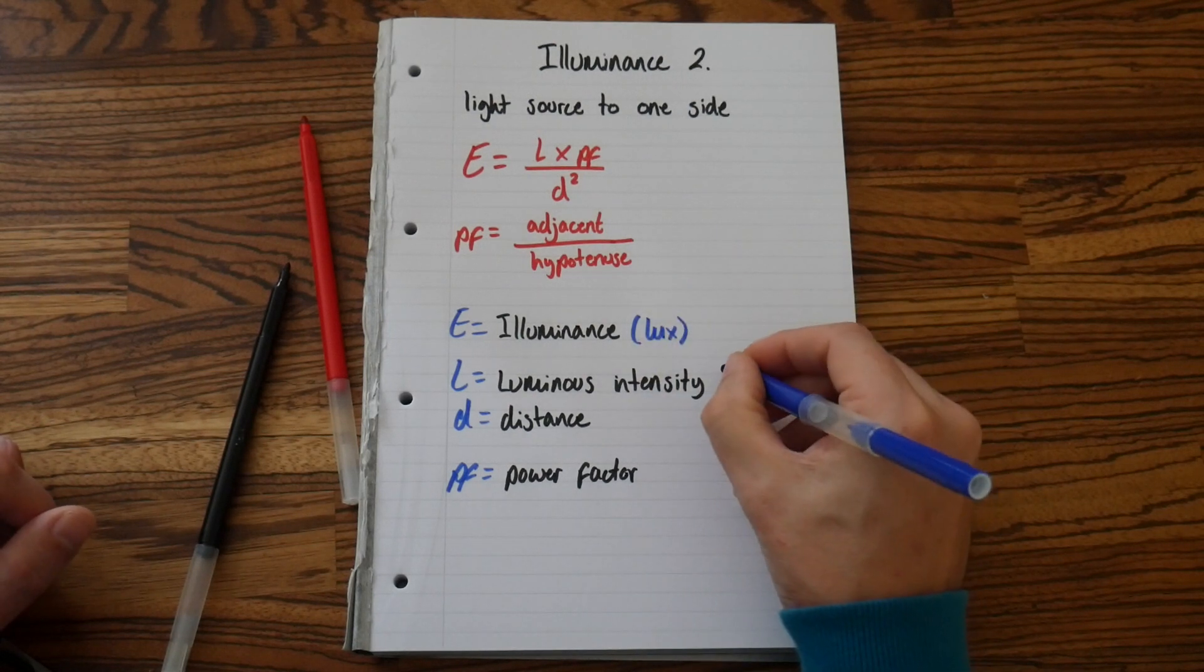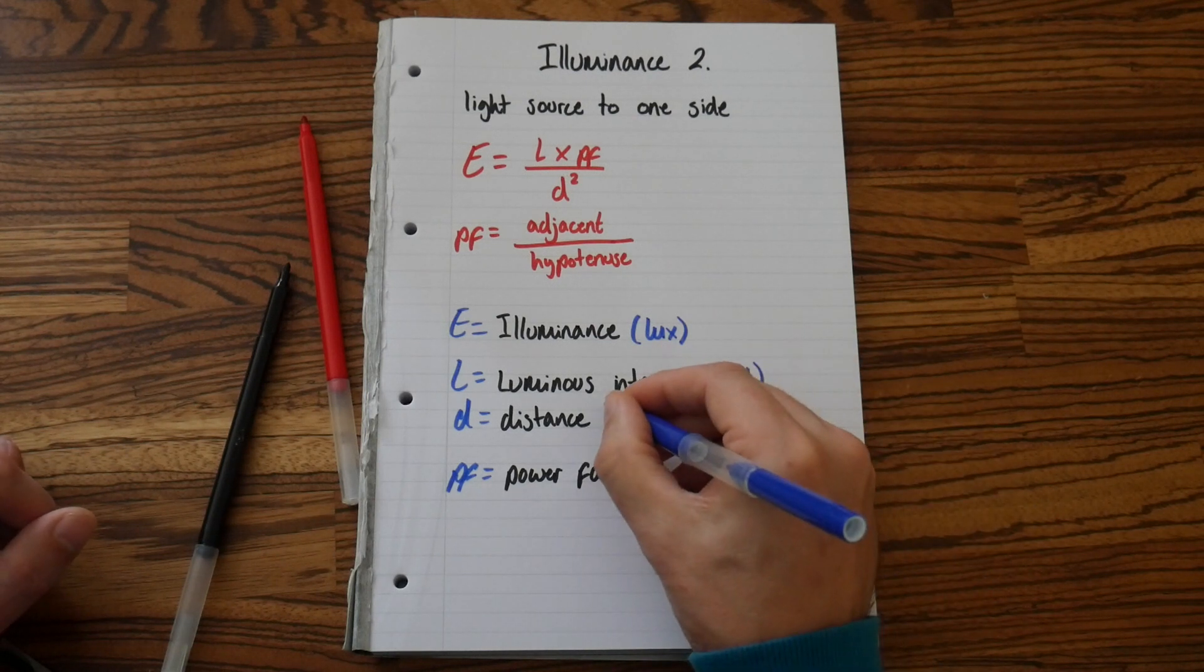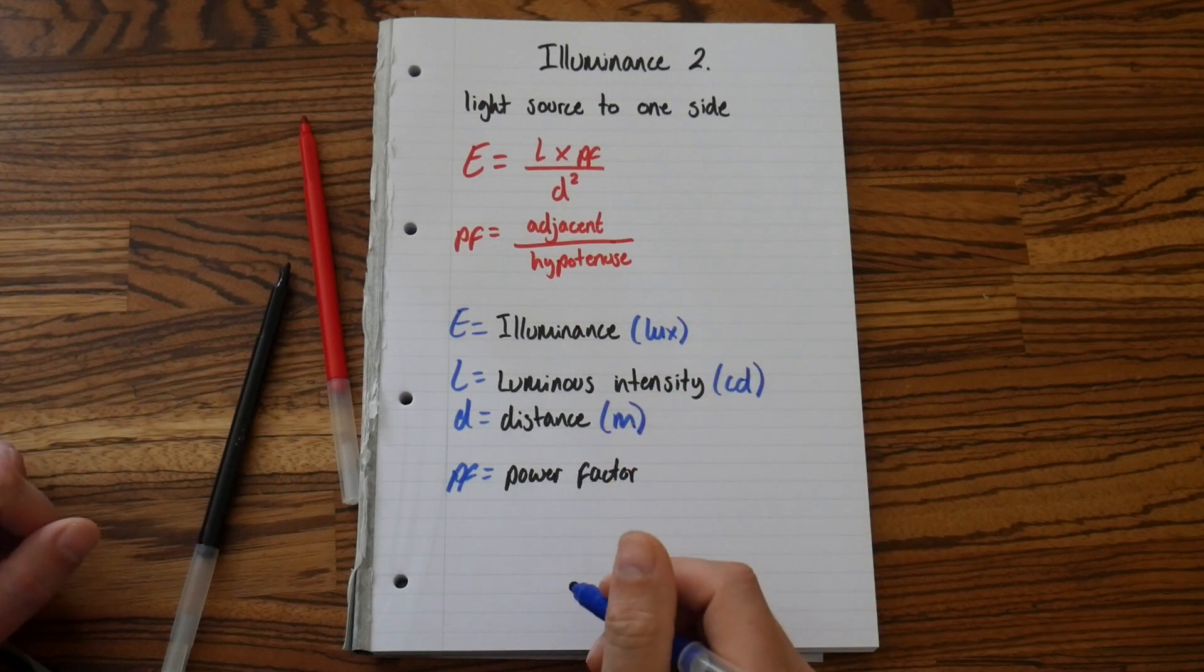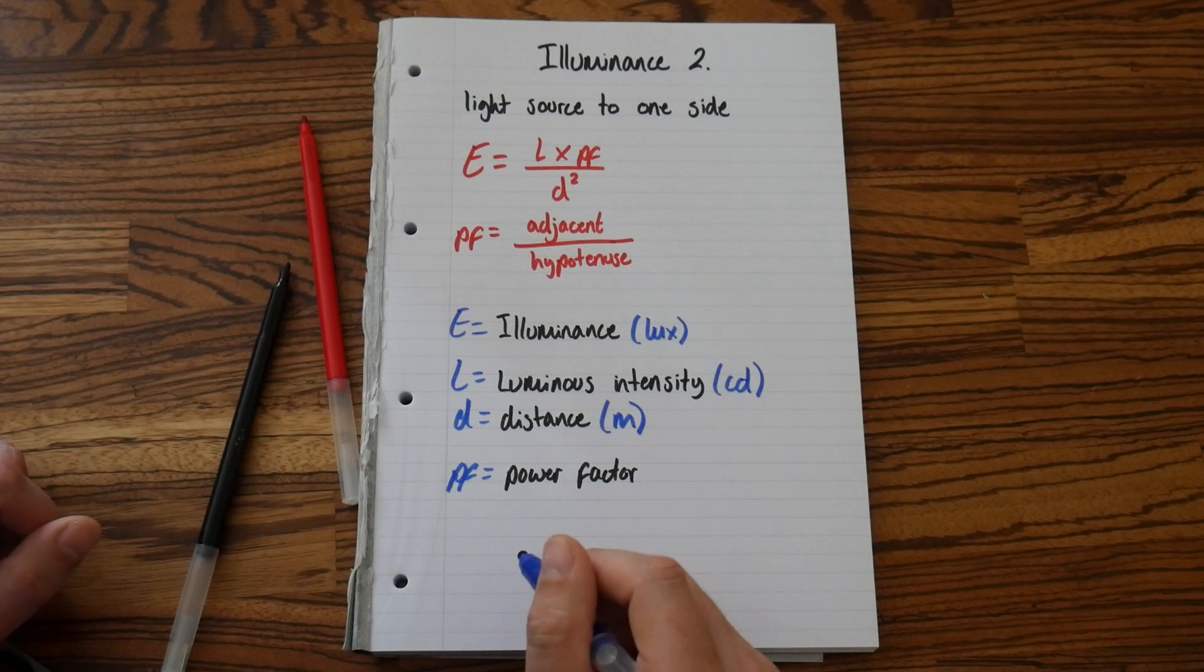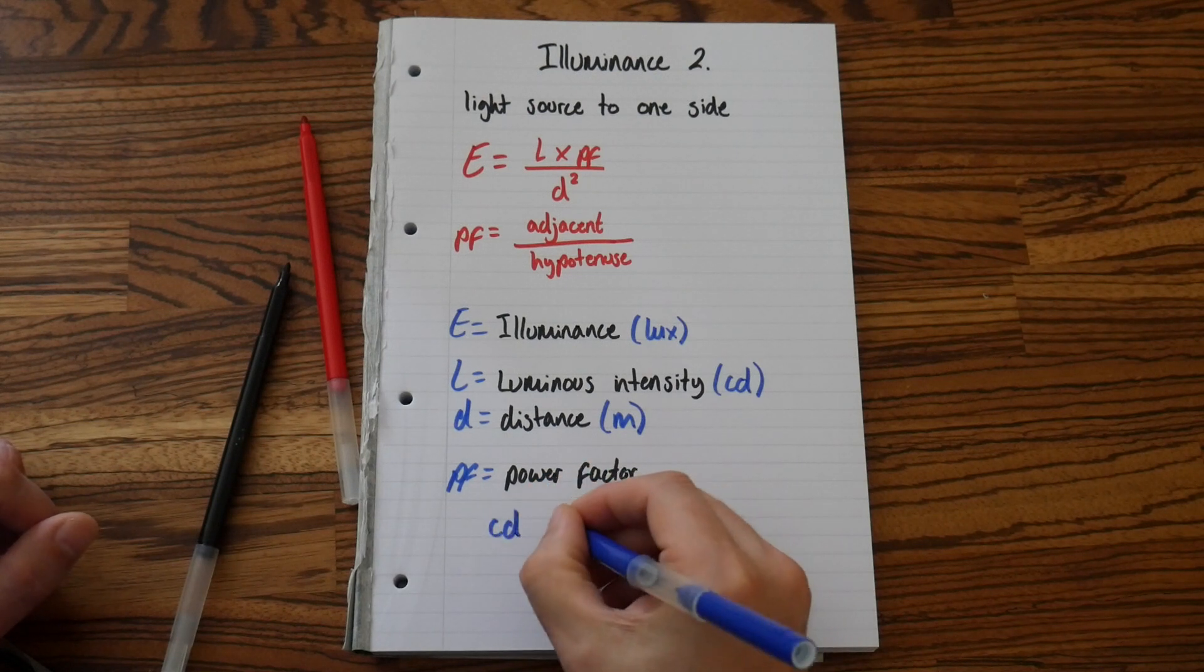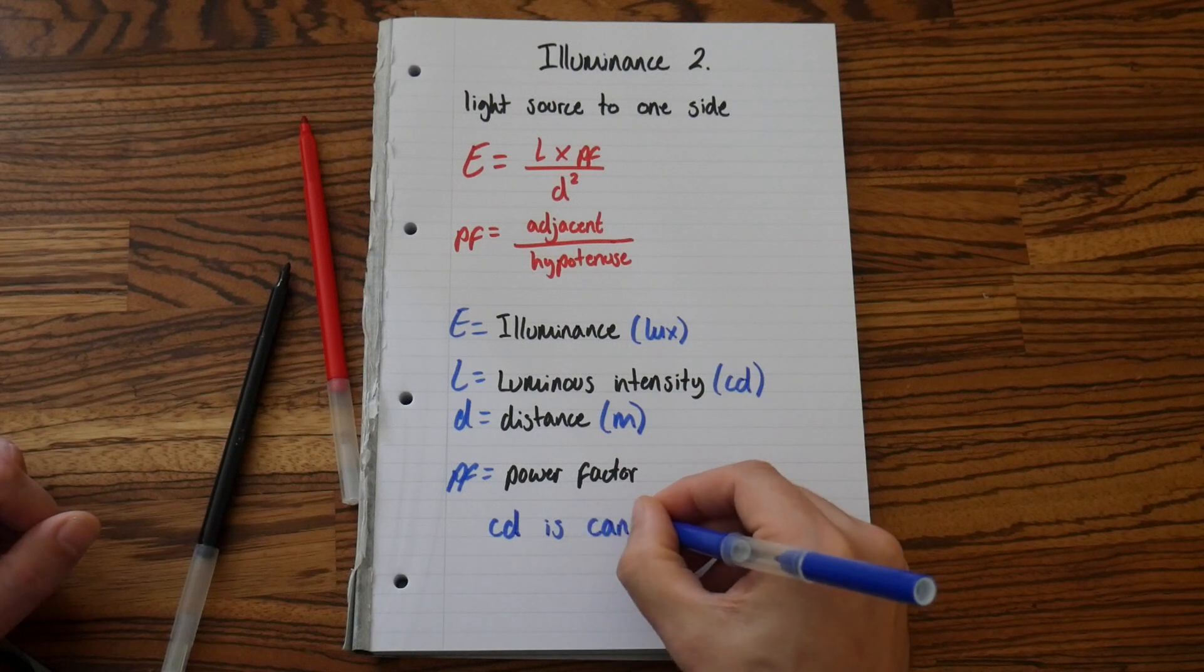The SI unit for Luminance intensity is lowercase c, lowercase d, Candela. Distance is meters and there's no SI unit for power factor. Although power factor is a value always less than one. Let's just make a little note. So CD is Candela. And there you go.